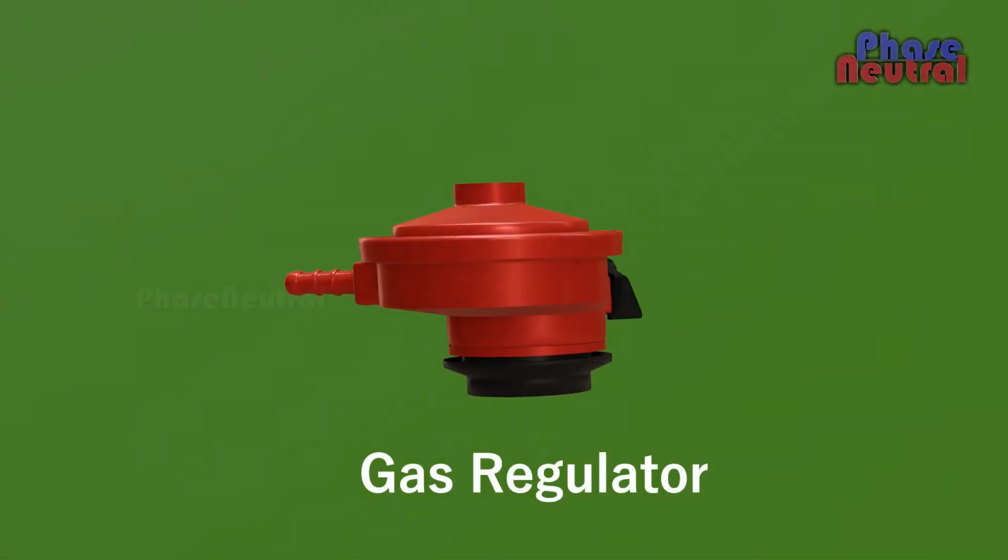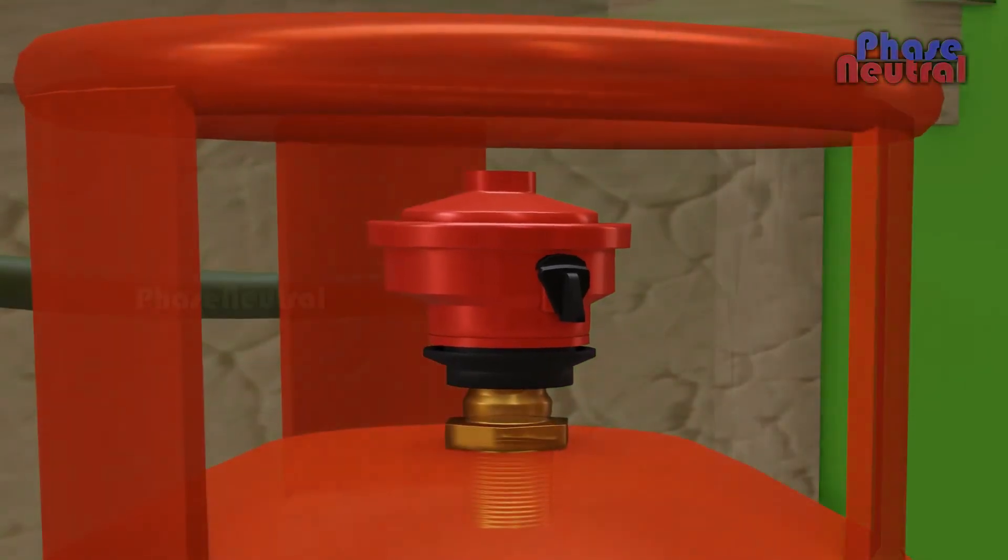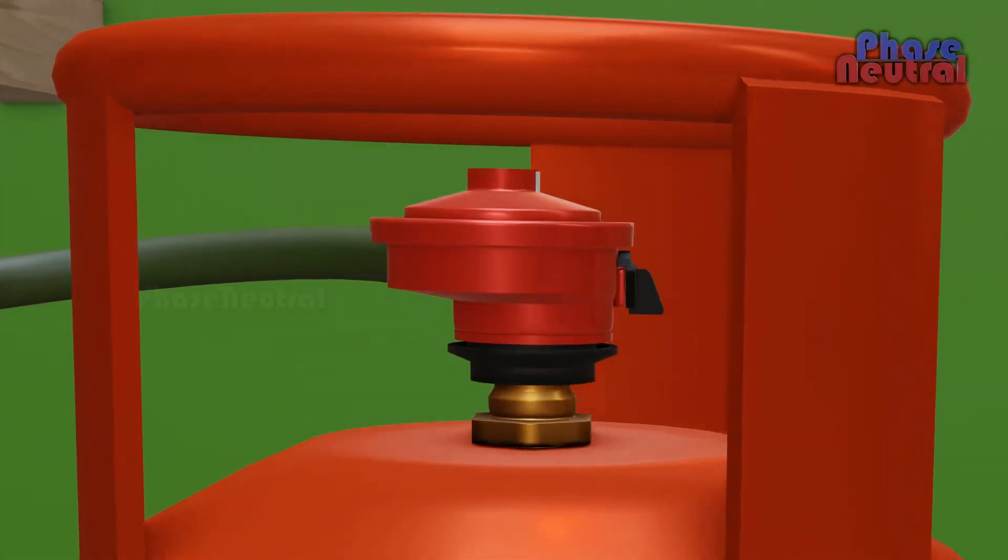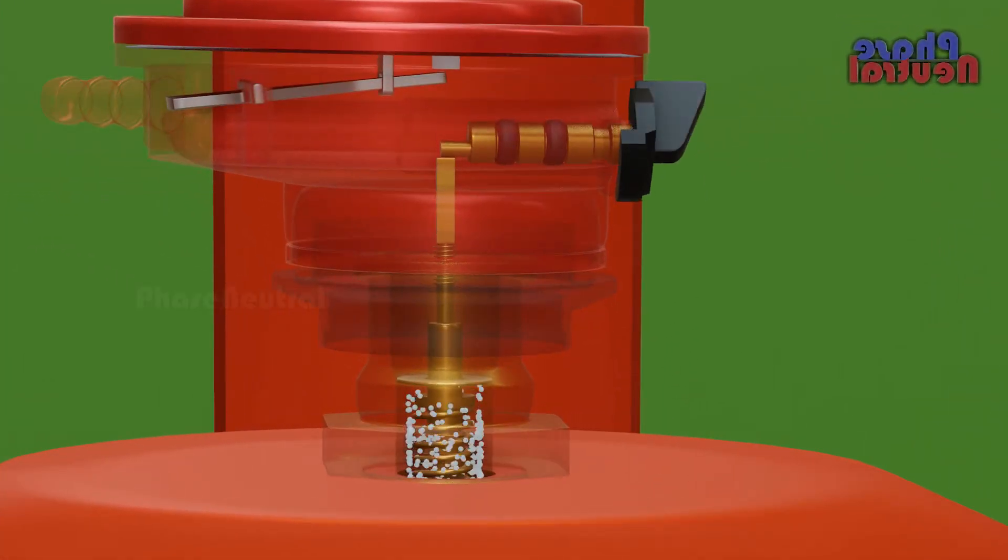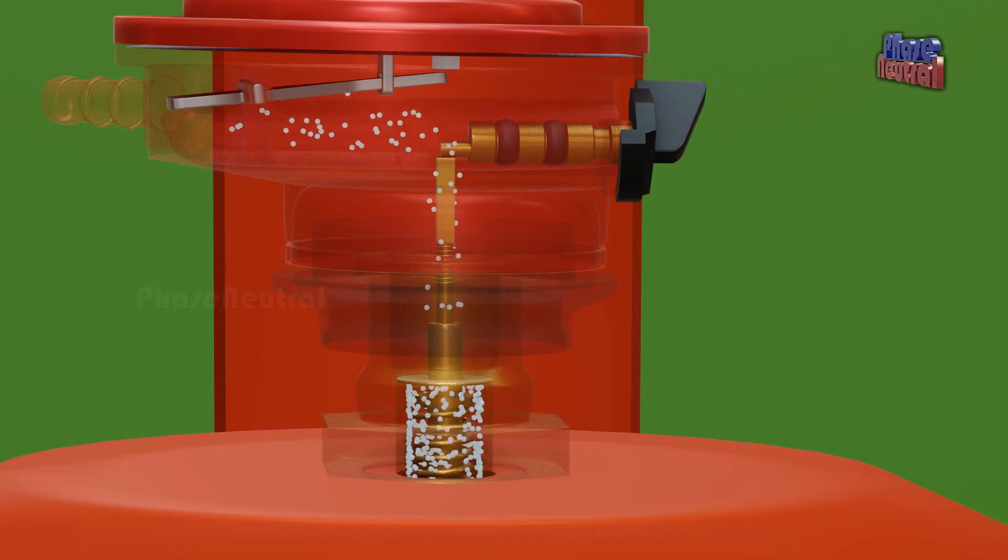Here is the importance of a gas regulator. The gas regulator has mainly two functions: regulate the gas flow and turn the cylinder on and off. When you rotate the knob to the on position, it pushes the cylinder valve pin and gas starts to flow out from the cylinder.